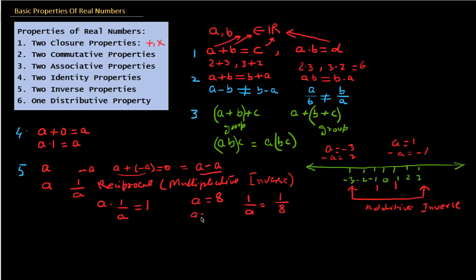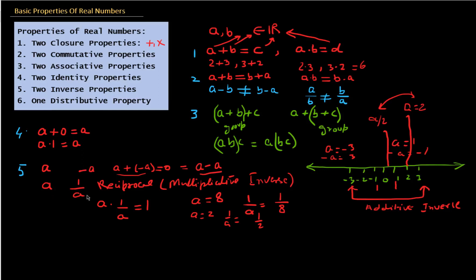If a number A is 2, there will be a number 1 divided by A, which is 1/2. If A is 2, its multiplicative inverse is 1/2, located at the halfway point on the number line. So multiplicative inverse and additive inverse are both covered in the inverse property: adding the additive inverse to A gives 0, and multiplying by the multiplicative inverse gives 1.